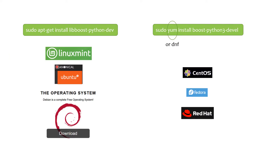If you use Ubuntu or other Debian-based Linux distributions such as Mint, please run 'sudo apt-get install libboost-python-dev', which will automatically install Python, Boost Python headers, and libraries in your system.